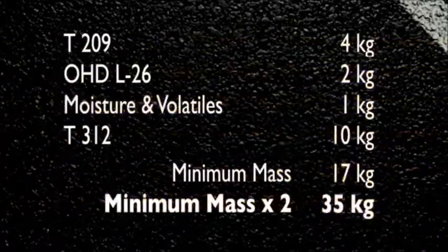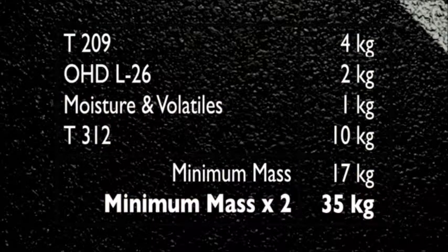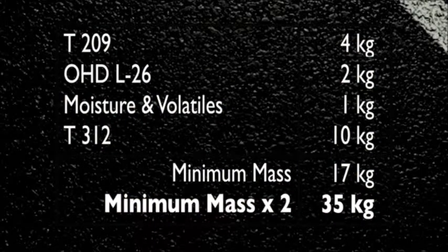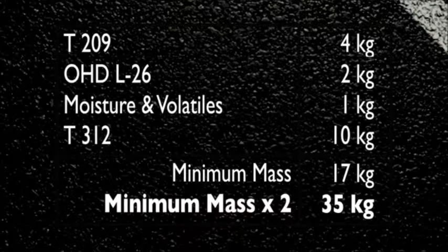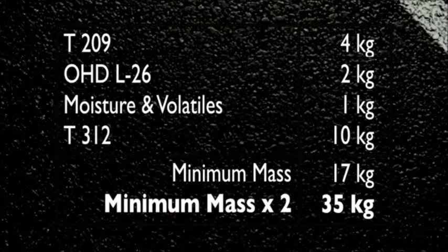For example, if you're obtaining a sample for specific gravity, bitumen content, moisture and volatiles, and SGC lab molds, you'll need about 35 kilograms of material.